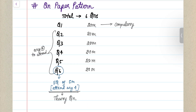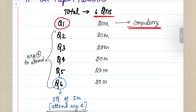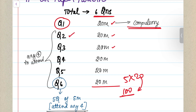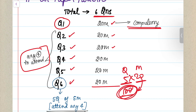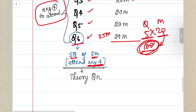Finally, let's discuss the question paper pattern. In total you will be given six questions in your examination, out of which Question 1 is your compulsory question. Each question carries 20 marks and you have to attend five questions totaling 100 marks. Out of Questions 2 through 6, you have to attend any four. Question 6 will have five sub-questions of five marks each — you only attend any four of those five, giving you 20 marks again. So always five questions for 20 marks each equals your 100 marks in total.